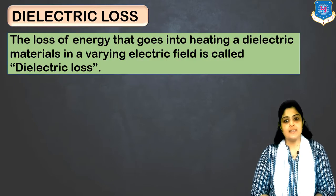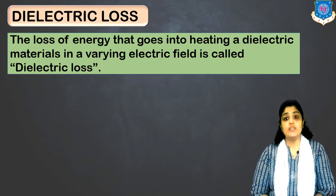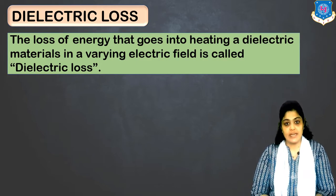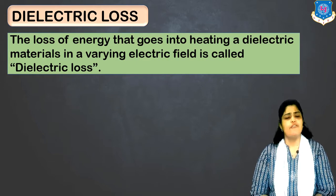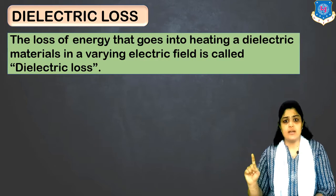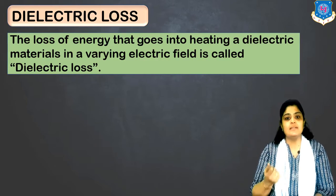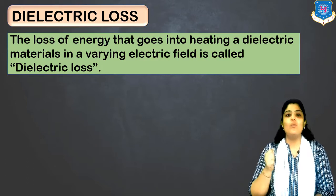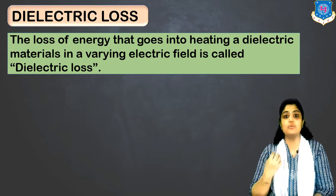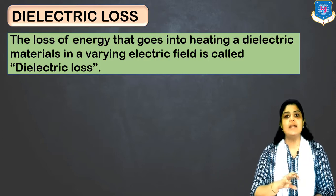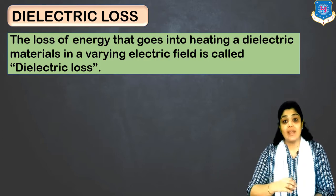The first thing I would like to discuss is dielectric loss. The loss of energy which goes into heating a dielectric material in a varying electric field is known as dielectric loss. Whenever we talk about the term 'loss,' it means energy is being released in some form. So why is this energy released, and how does it happen?